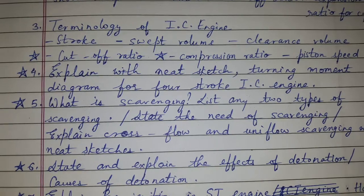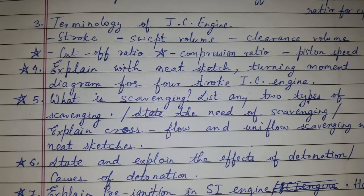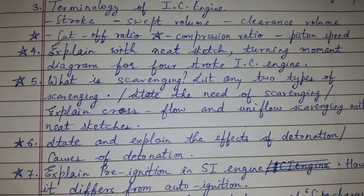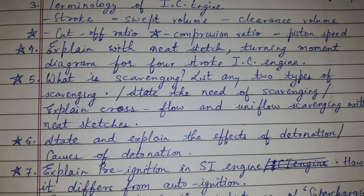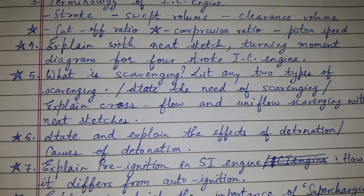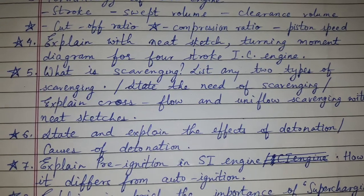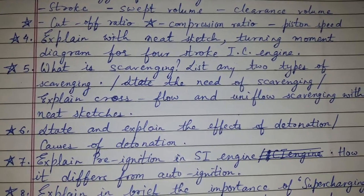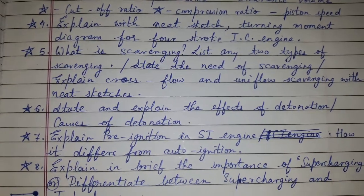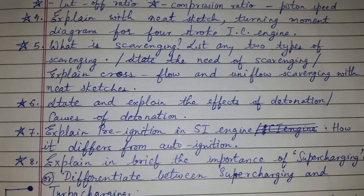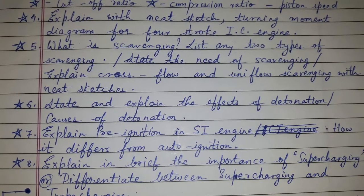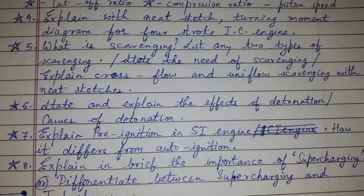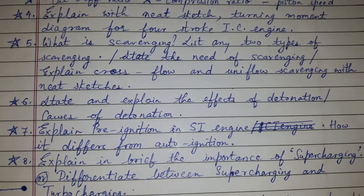Question number four: explain with a neat sketch the turning moment diagram for a four-stroke IC engine. Question number five covers scavenging — list any two types of scavenging, state the need of scavenging, or explain cross-flow and uniflow scavenging with a neat sketch. Question number six: state and explain the effect of detonation, or it can be asked as causes of detonation.